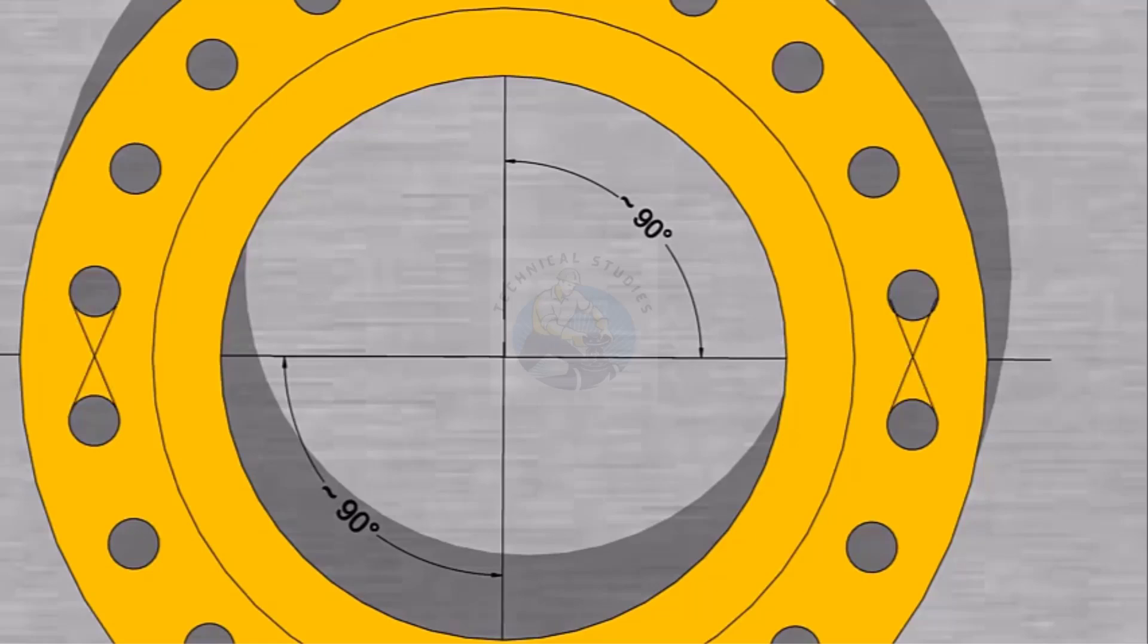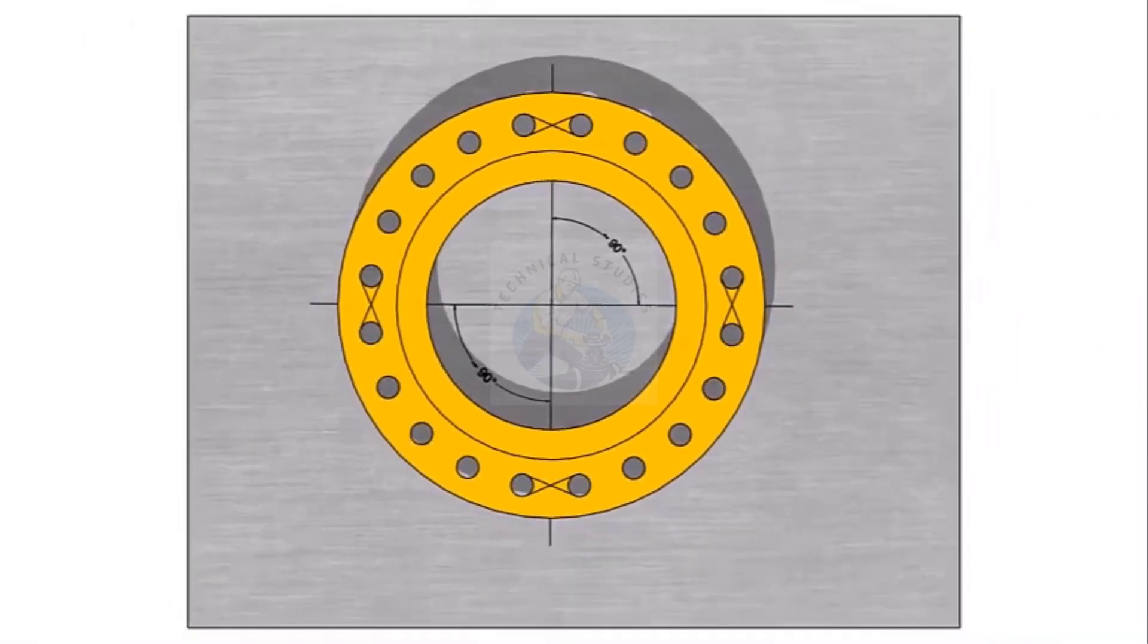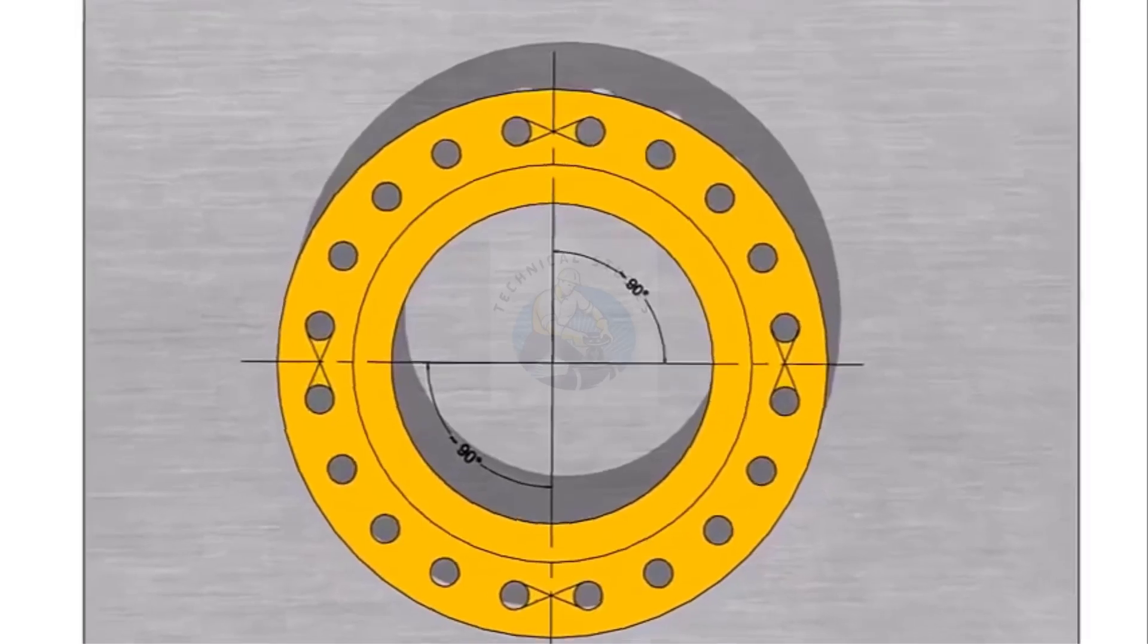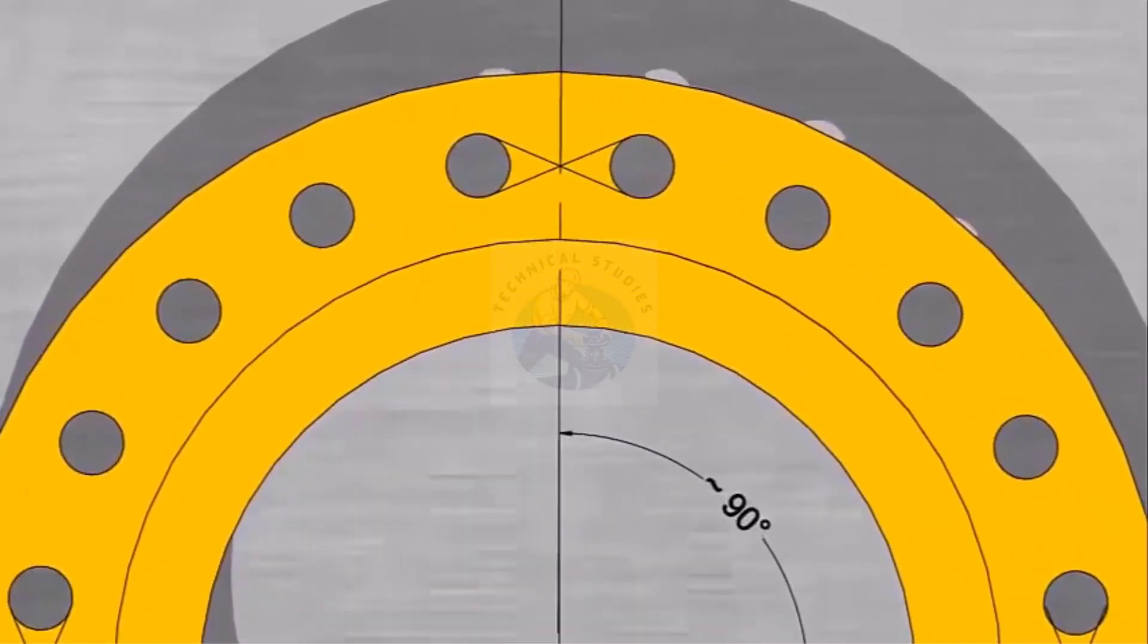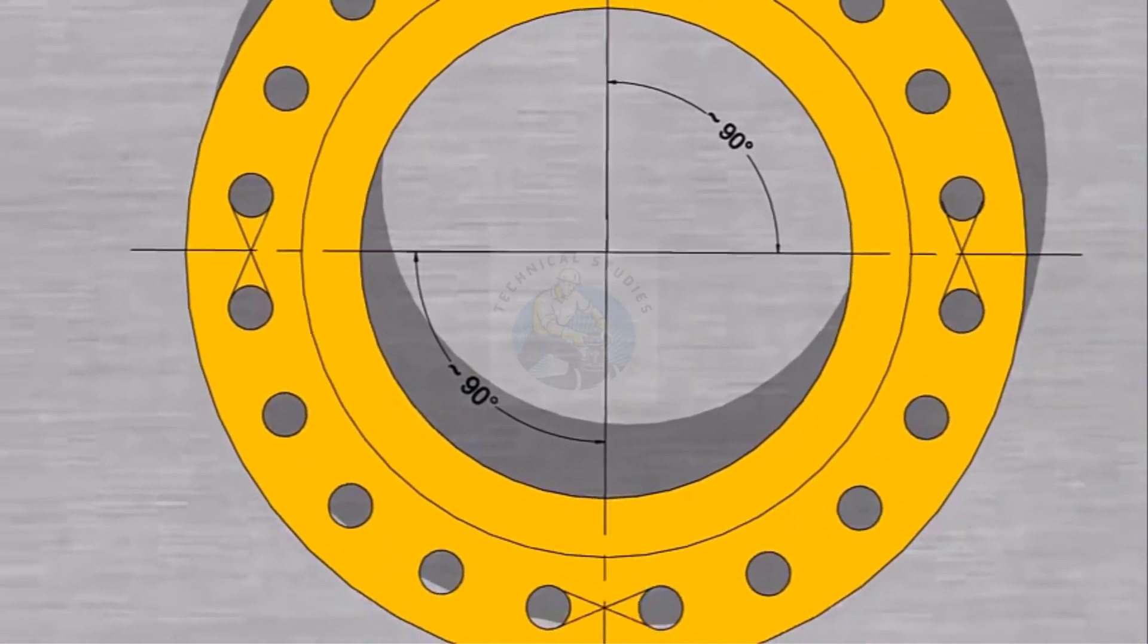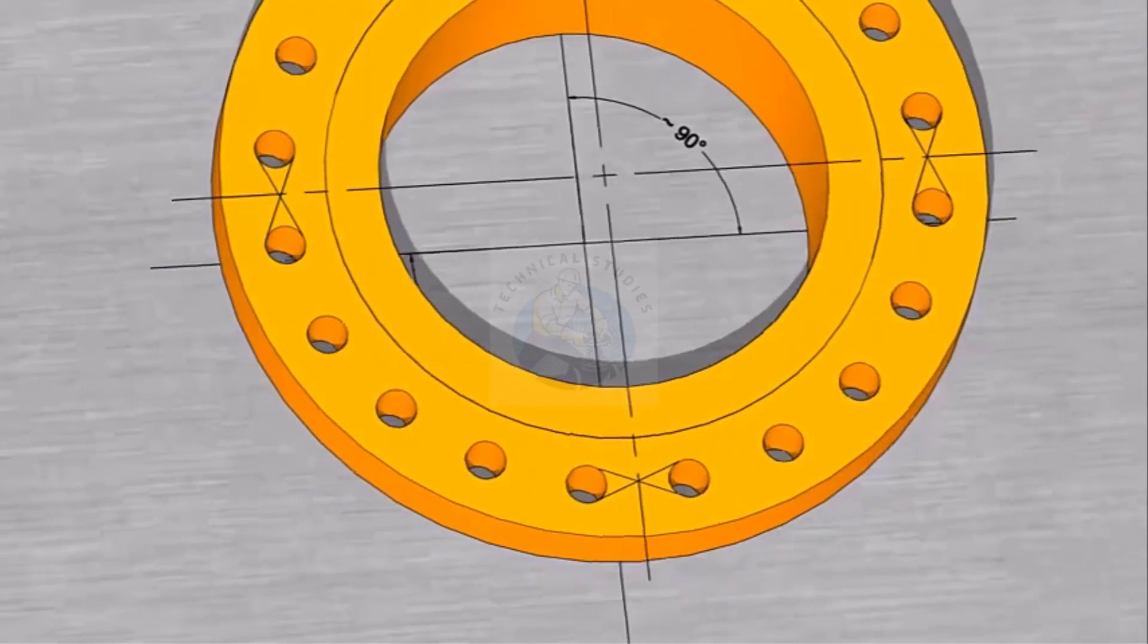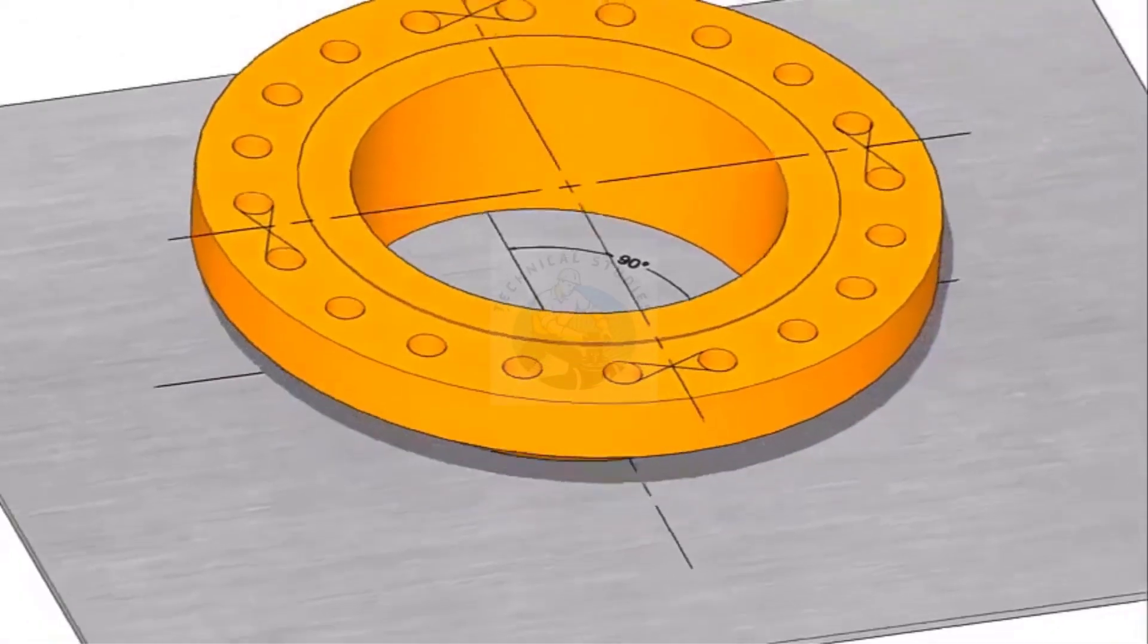Draw centers on 90 and 270 degrees and mark the center lines. Use a right angle and match the center line on the plate and on the flange.